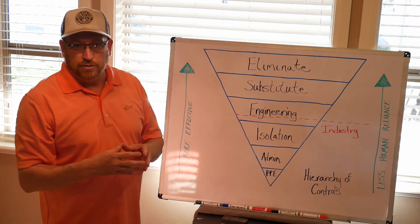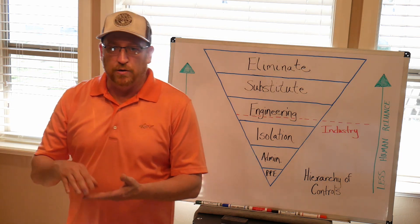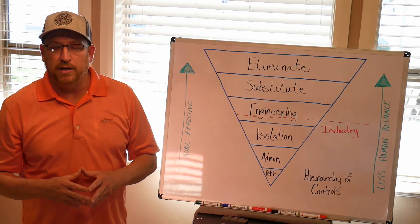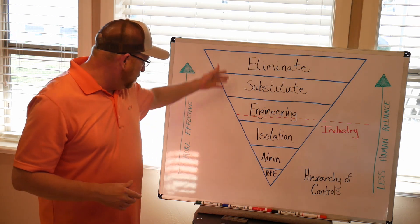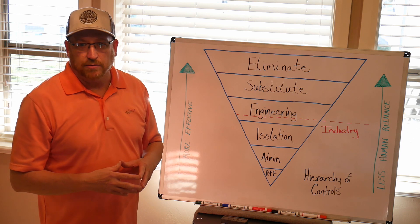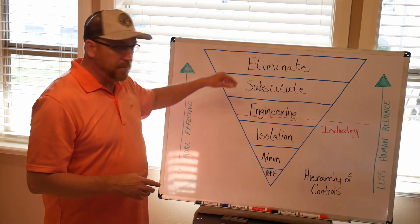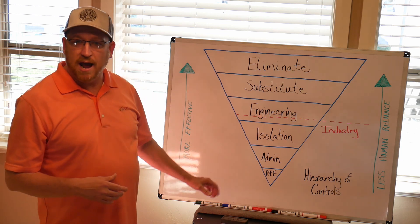So you do your hazard recognition, your pre-shift, your on-shift, your workplace exam, whatever you're doing, and you come across a hazard. You should be using this hierarchy of control to figure out how to control that hazard. Can I eliminate it? If not, do I substitute it? And you just work your way down.